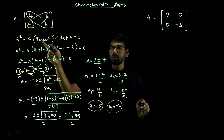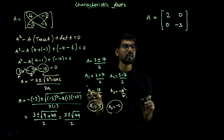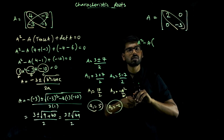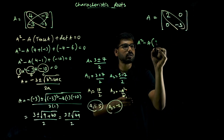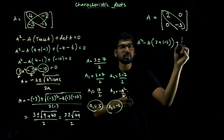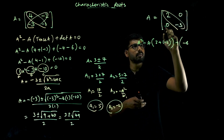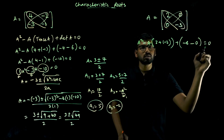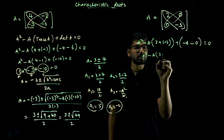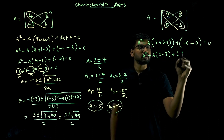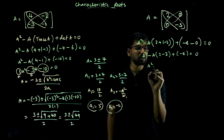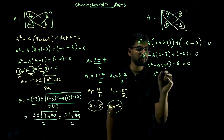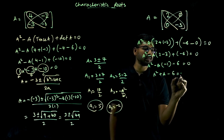For one more question: characteristic equation is lambda squared minus lambda times trace of A plus determinant of A. Trace of A is sum of principal diagonal elements: 2 plus minus 3. Determinant of A is 2 times minus 3, that is minus 6, minus 2 times 0, that is 0. So lambda squared minus lambda: 2 minus 3 is minus 1; and minus 6 equals zero.